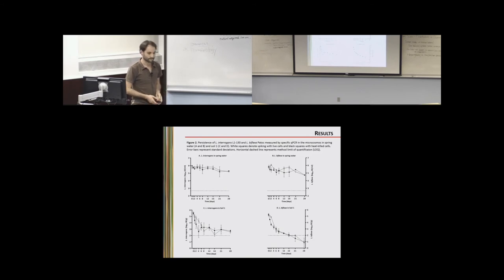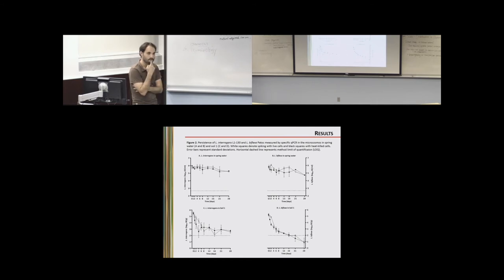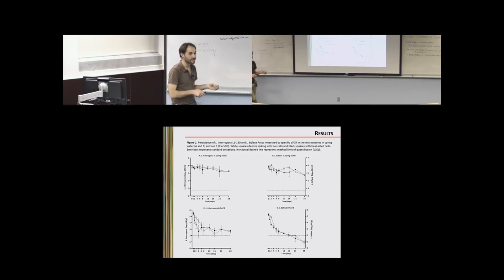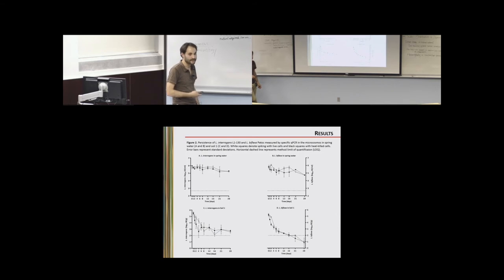A further question was raised about whether comparing heat-killed cells in soil versus water could help determine how much DNA is accessible versus how much reflects actual survival. We cannot distinguish with PCR — we're only detecting DNA — so we don't know if the stabilizing concentration comes from dead cells with persisting DNA, or from genuinely live cells remaining in the soil or water.